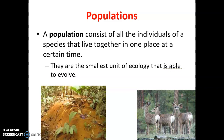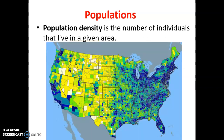One of the first phrases we talk about is population density, which looks at the number of individuals in a given area. That area might be a county, a square mile, or a square inch if we're talking about bacteria in a petri dish. In the picture here, we have human population density in the United States. We see areas like Los Angeles in California with very high population density, but areas like eastern Montana and the Dakotas have much lower population density.